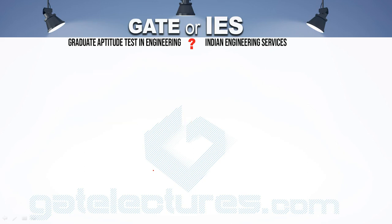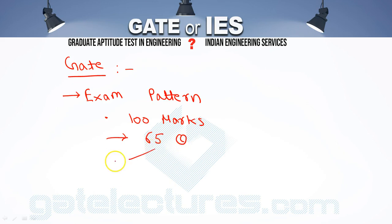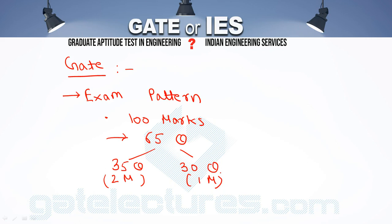This video will discuss which exam is better for which student — some students will find GATE better, some will find IES better, and some students can crack both exams together. Let's first discuss GATE. The GATE exam is of 100 marks with 65 questions. Out of 65 questions, 35 questions are of 2 marks each, and 30 questions are of 1 mark each.